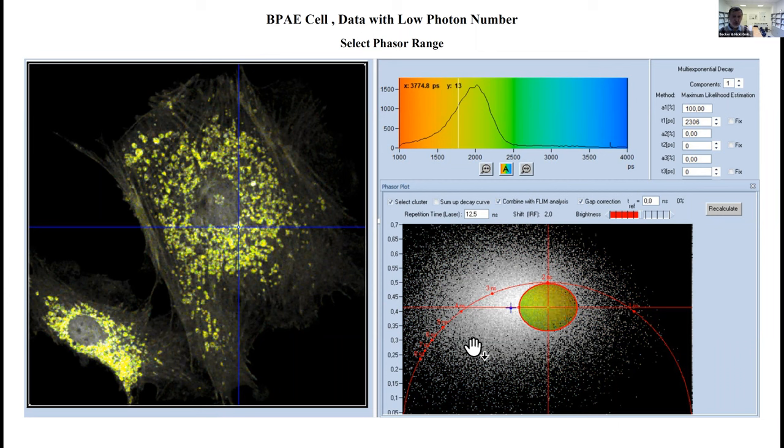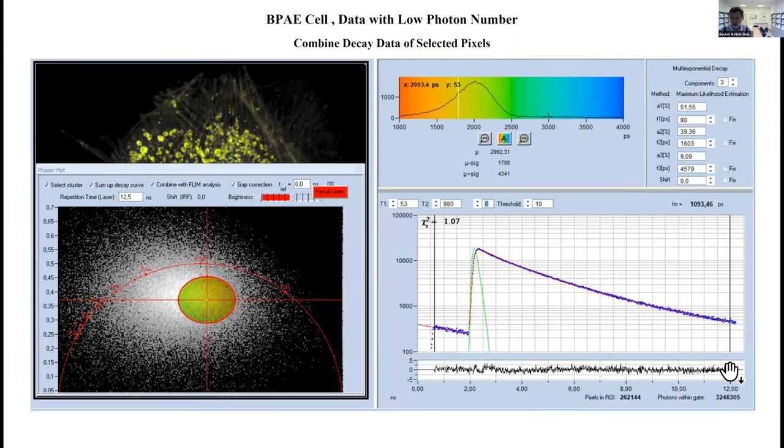Back-annotate the selected pixels in the time domain image, and sure enough we are selecting the mitochondria. That's good. In the next step we sum the decay curves of all pixels which we have selected up, and we get a beautiful fluorescence decay curve which contains more than three million photons compared to something like 200 in the individual pixels.